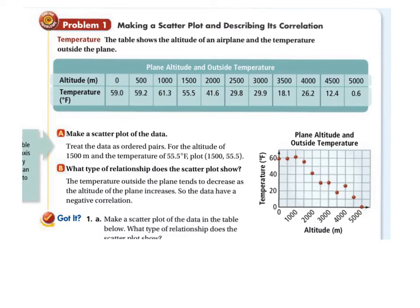So your first example, you have to make a scatter plot and describe its correlation. So plot these points, X and Y. Plot them: 0, 59; 505, 59.2. So again, plot these, each of these points. Notice overall, it's a negative correlation.